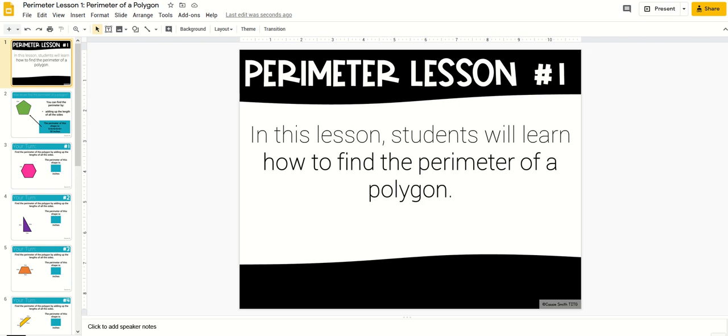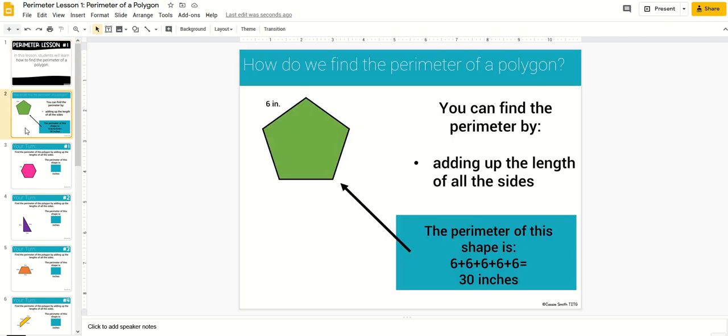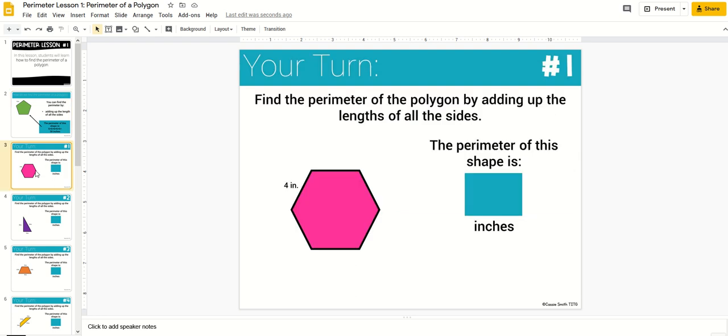The bundle includes 83 digital companion lessons. Each lesson includes between one and three teaching slides that explain the concept to students. After that, there are ten practice problems.